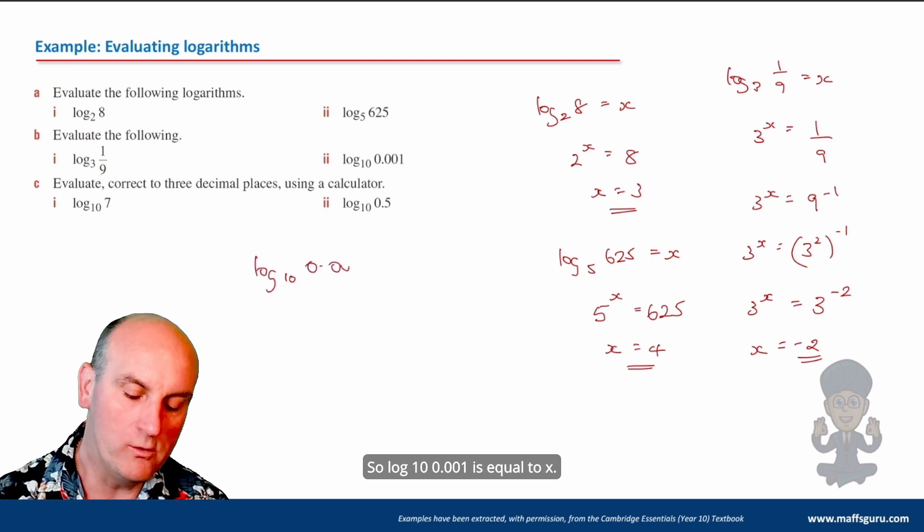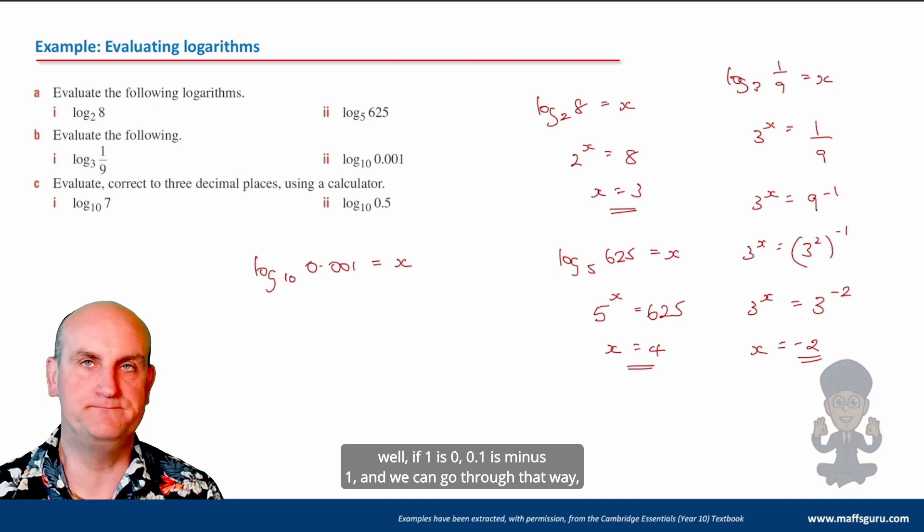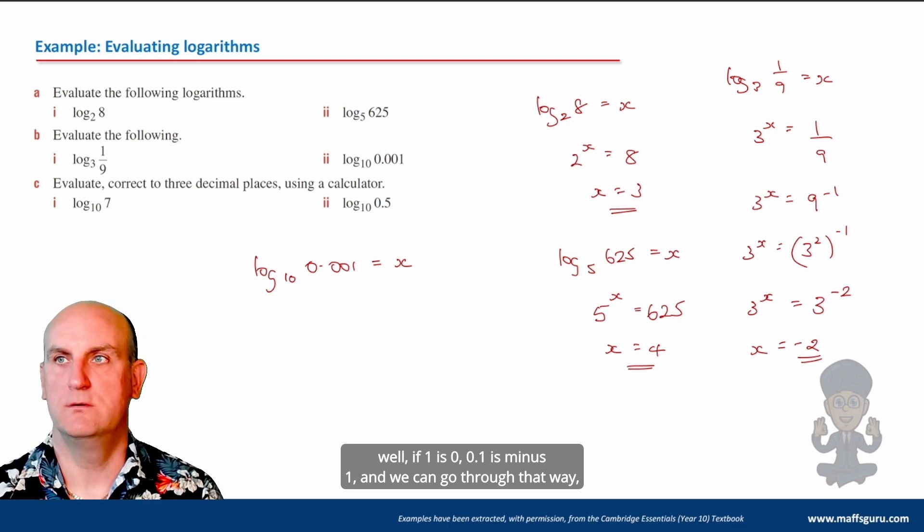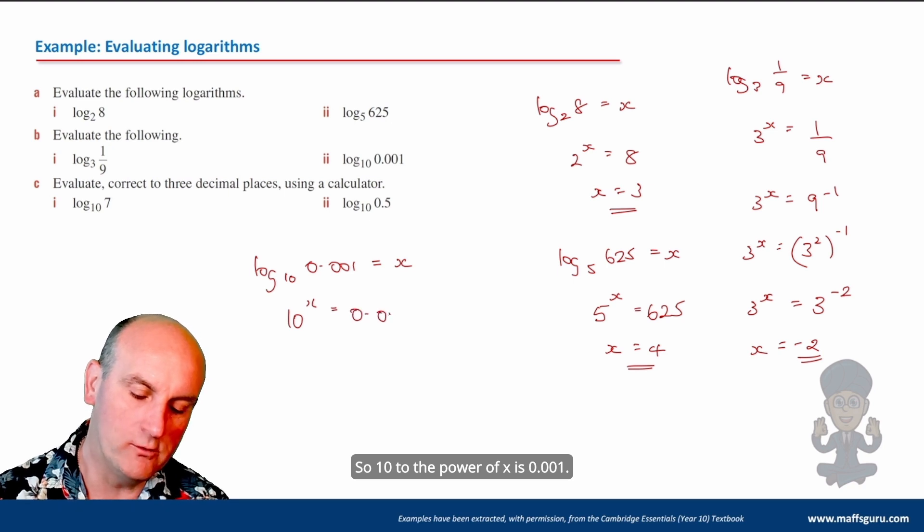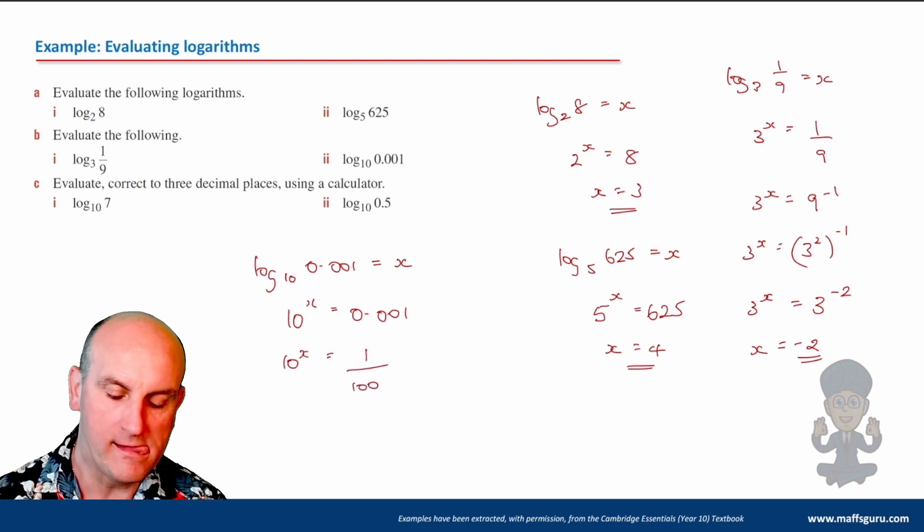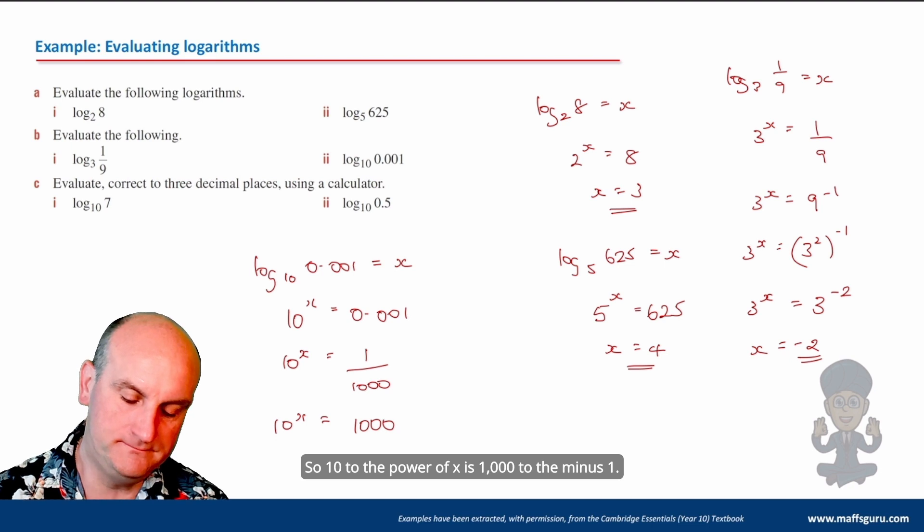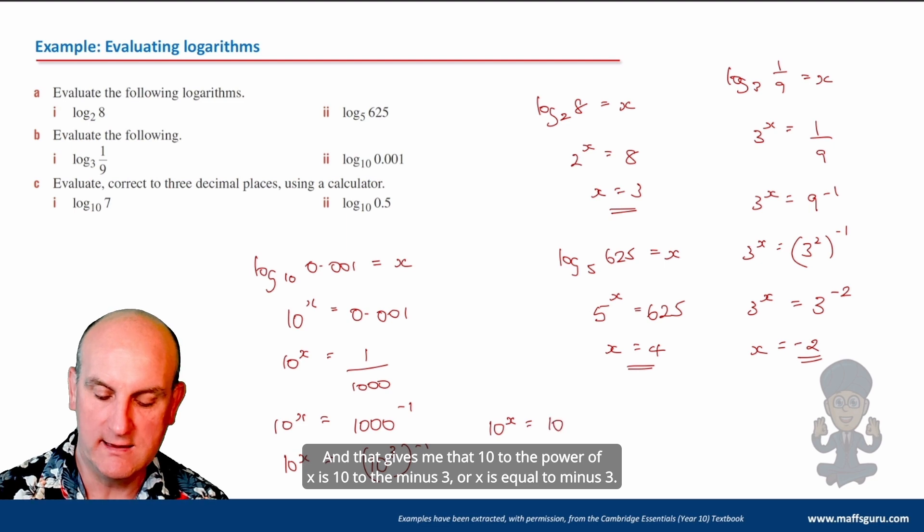Log to the 10 of 0.001. So log 10 of 0.001 is equal to x. Well, again, another way of doing this is to go back to saying 10 to the power of x is 0.001. So that is going to give me 10 to the power of x is 1 over 1,000. So 10 to the power of x is 1,000 to the minus 1. 10 to the power of x is equal to 10 cubed to the minus 1, and that gives me 10 to the power of x is 10 to the minus 3, or x is equal to minus 3.